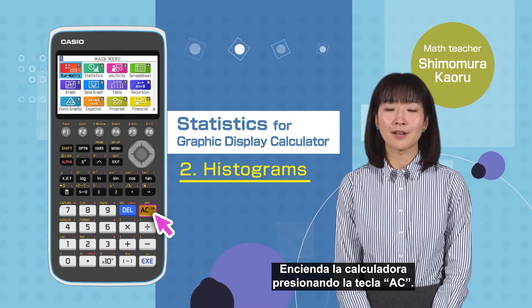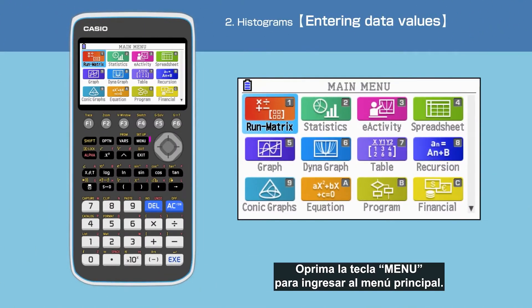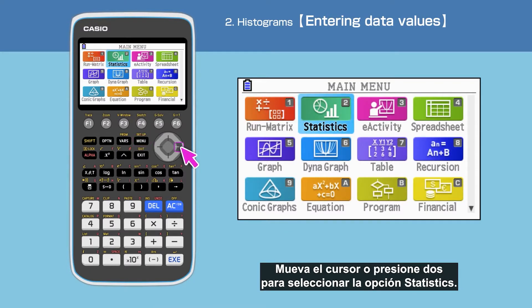Switch on your calculator, pressing AC button. Press the menu button to open the main menu, then move the cursor or press 2 to choose the statistics function.